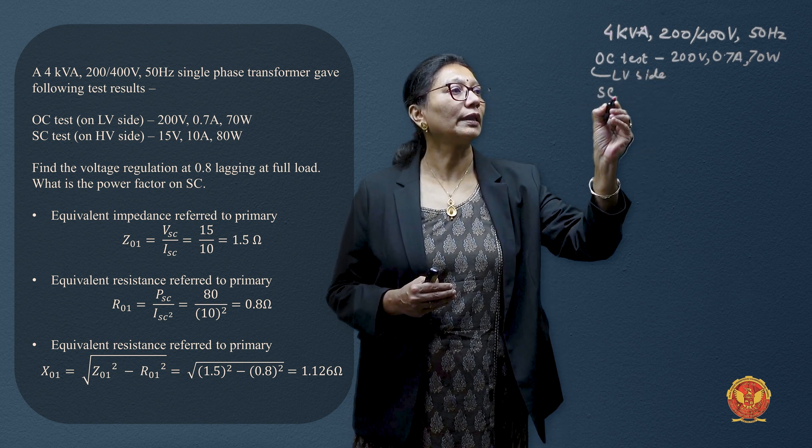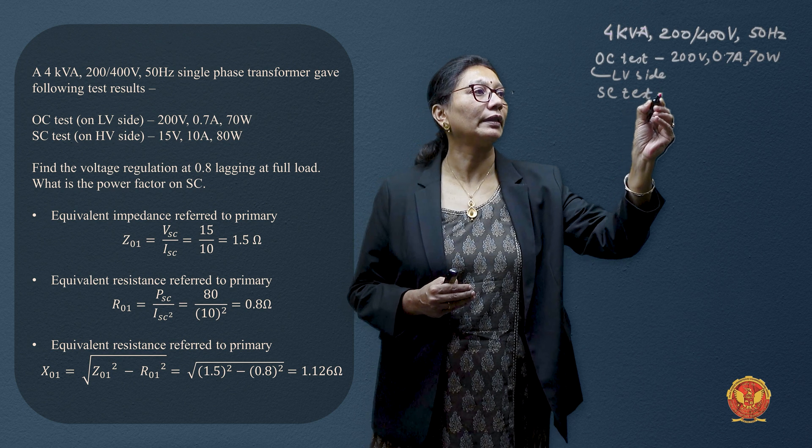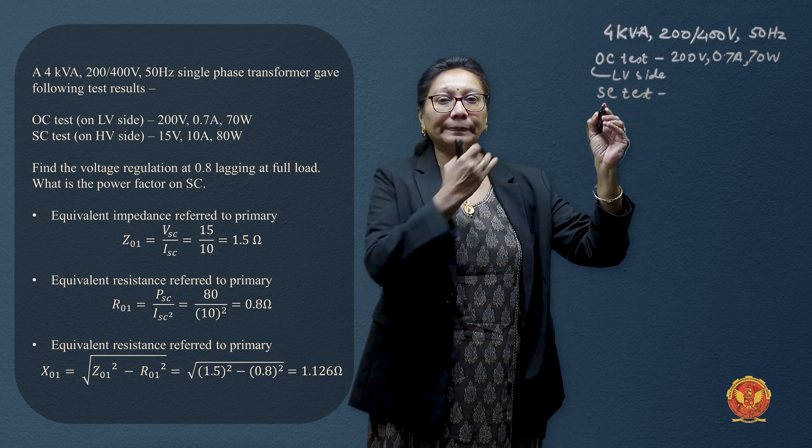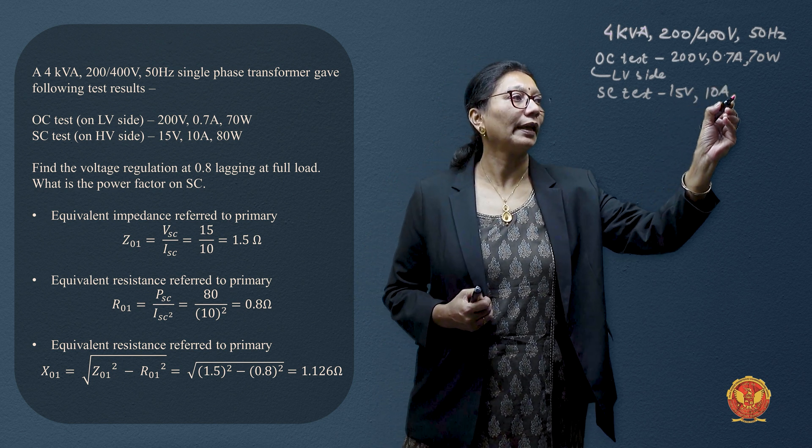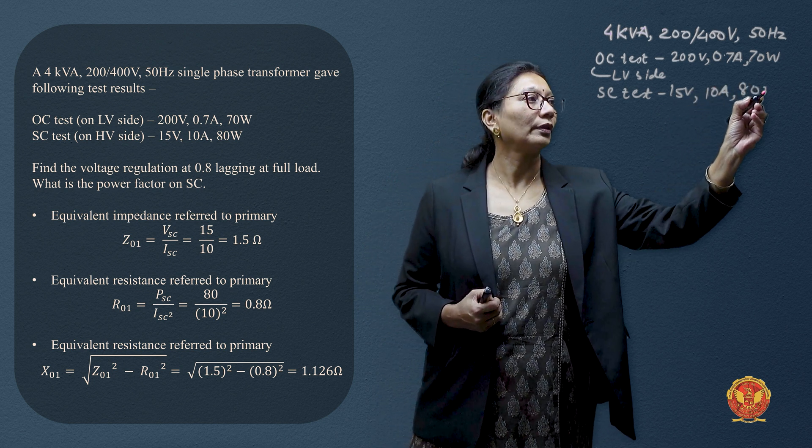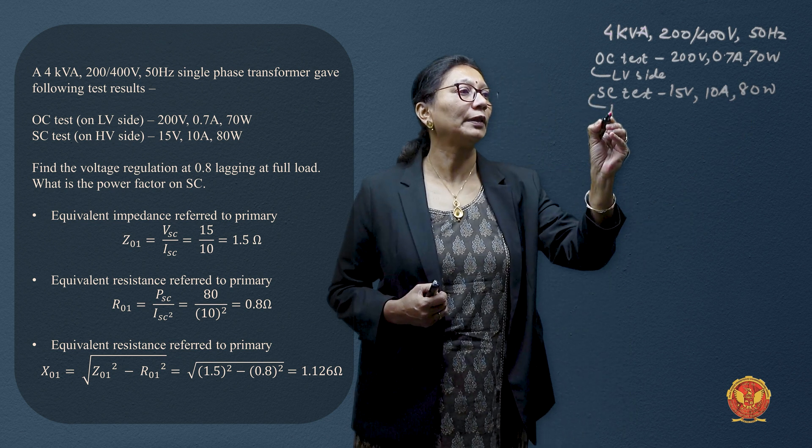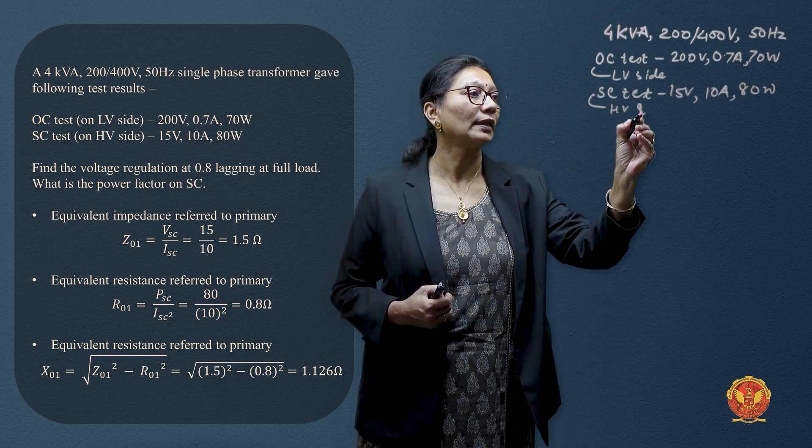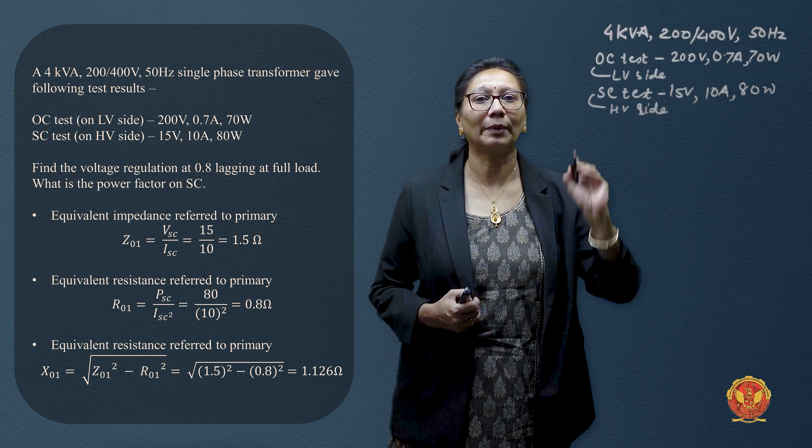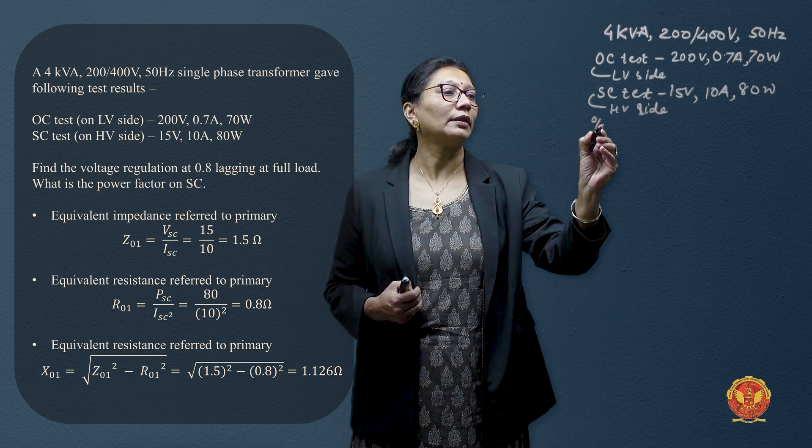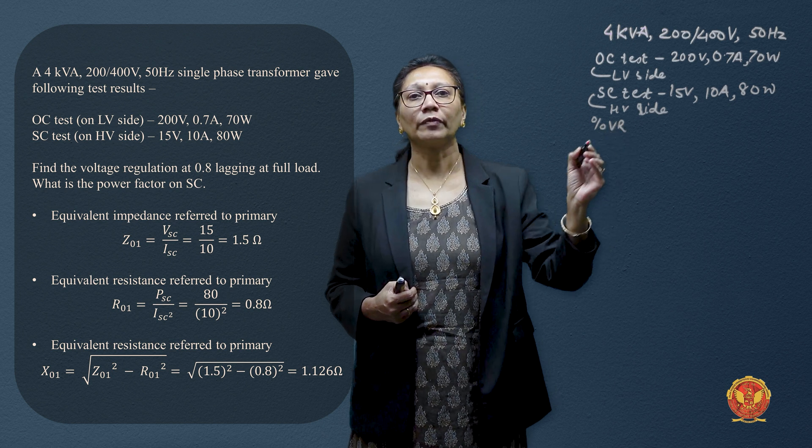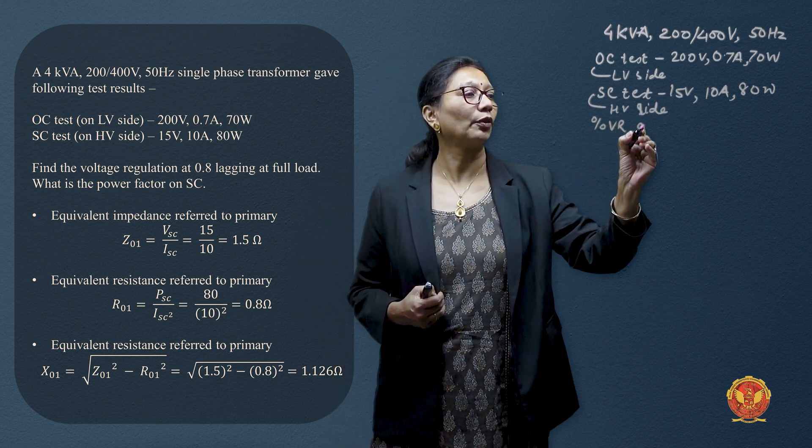And short circuit test is giving us readings of 15 volt, 10 ampere and 80 watts. This test would have been performed on HV side, it is also given in the numerical. What we have to calculate is percentage voltage regulation at which power factor? 0.8 lagging.